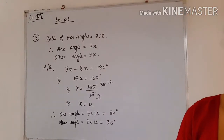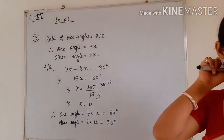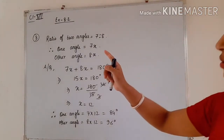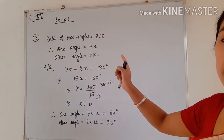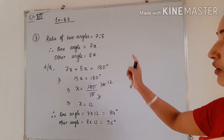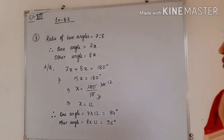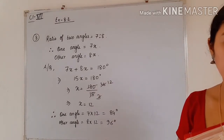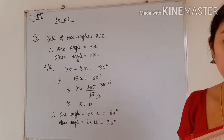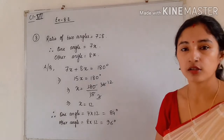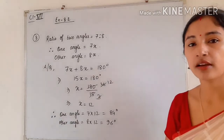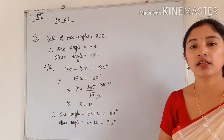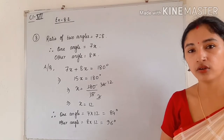In question number 3, the measures of two angles are given in the ratio 7 is to 8. It is also given that when we add the two angles, we get a supplementary angle. Supplementary angle means 180 degrees. So if we add the two angles, we will get 180 degrees.